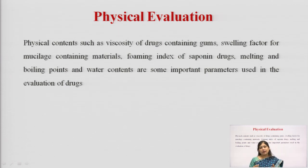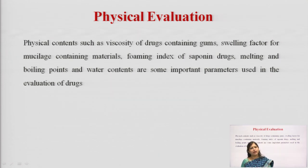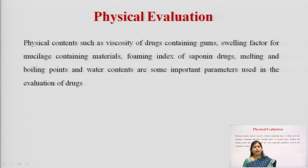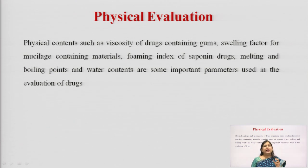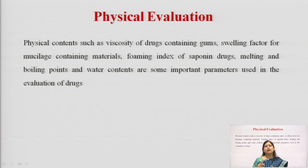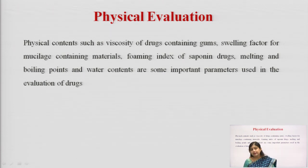For example, if a drug contains mucilage, mucilage has a property of swelling, so we check the swelling index of that drug. If a drug has saponins, it will have frothing property, so we check the foam index. If a drug is crystalline in nature we check its melting point and purity. These are few examples where using the basic property of the drug we decide and perform certain studies.